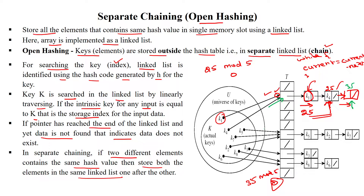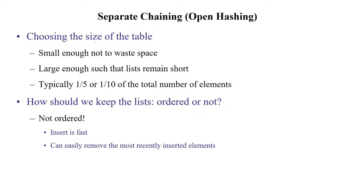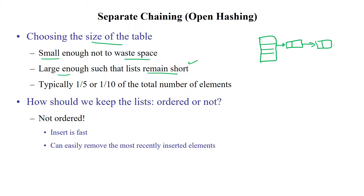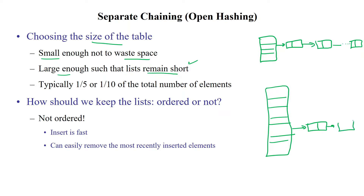When choosing the table size: if you choose a small size, there is no wastage of space. However, if the table size is small, the linked list length will increase. If you use a large number of buckets in the hash table, the length of each list will be short.